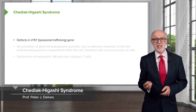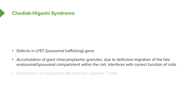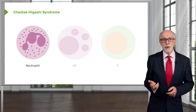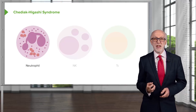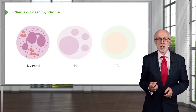In Chediak-Higashi syndrome, there is a defect in the LYST lysosomal trafficking gene. There is an accumulation of giant intracytoplasmic granules, due to defective migration of the late endosomal-lysosomal compartment within the cell, which interferes with the correct function of these cells. There is dysfunction of neutrophils, natural killer cells and cytotoxic T cells. We can see a neutrophil with these giant granules accumulating within the cell, compromising its function.